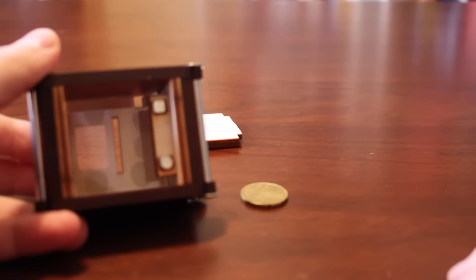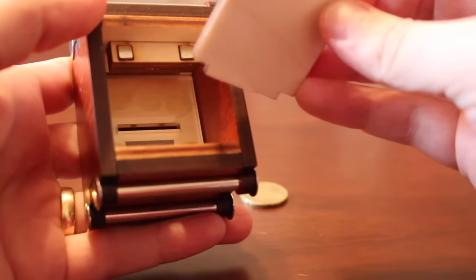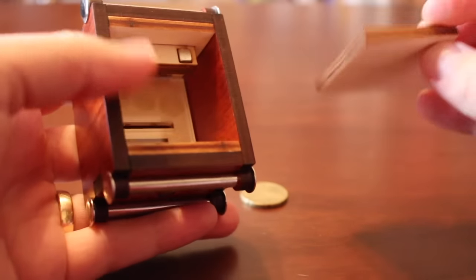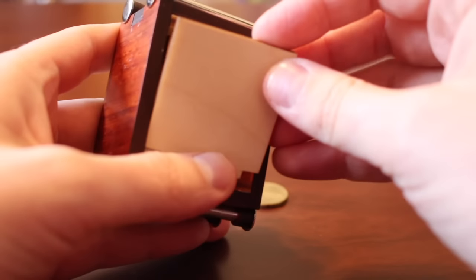As you can see, that takes the bottom off of the puzzle. The bottom is held on by two magnets, each one just strong enough to hold it in place so that you can't pull it off.